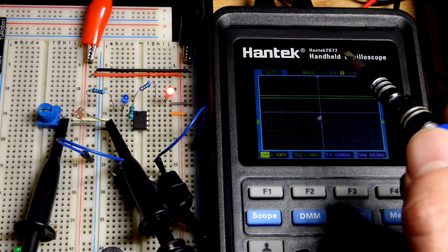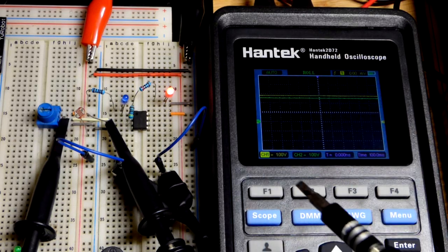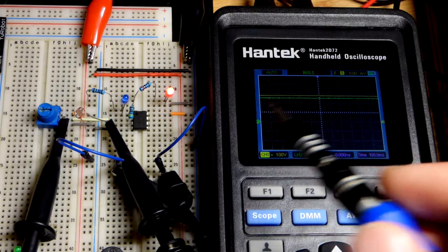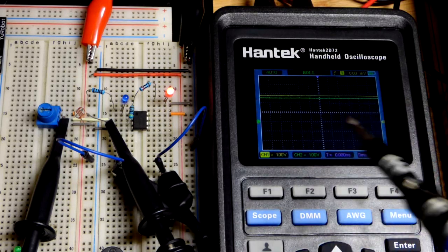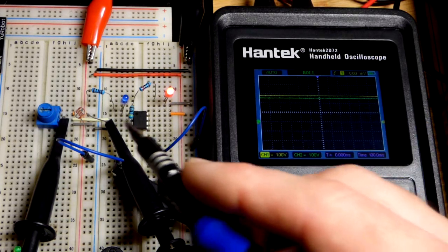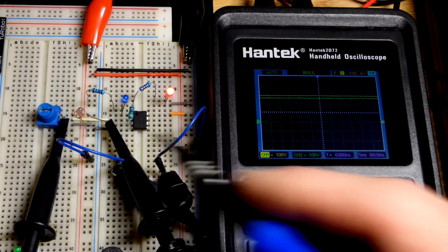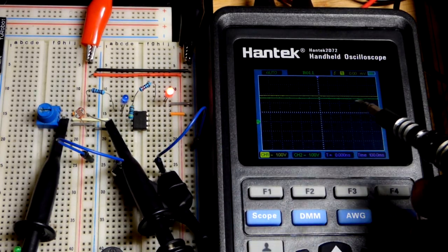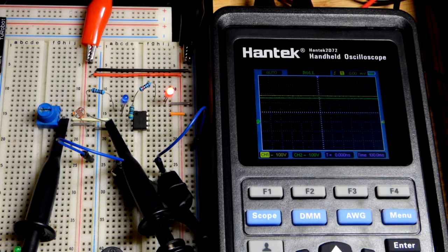So we have the Hantech 2D72 right there, it's a multi-purpose tube, but we have it set to read roll. You can see it rolling, and then two channels right now. The yellow line, which is a little bit above the green line, that's the light dependent resistor voltage divider. You can see the voltage here is zero volts, it's going up one, two, three, so somewhere around three.